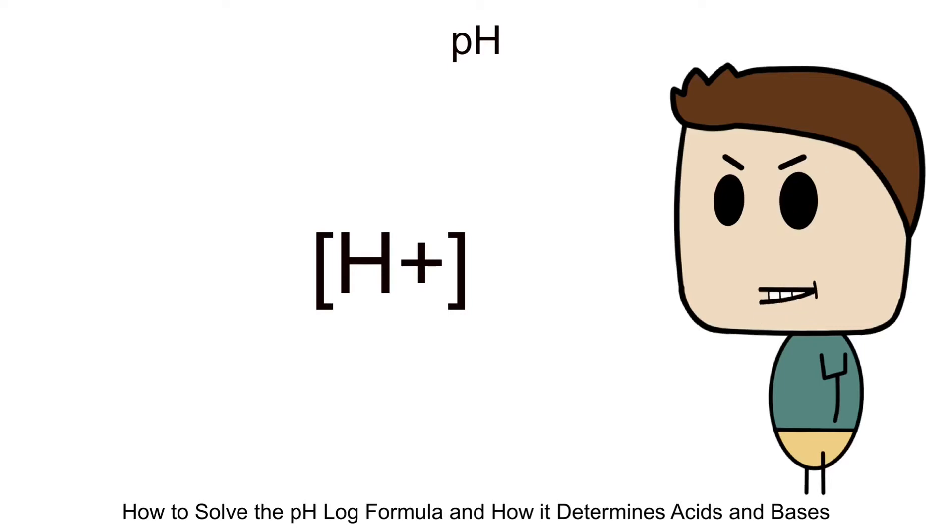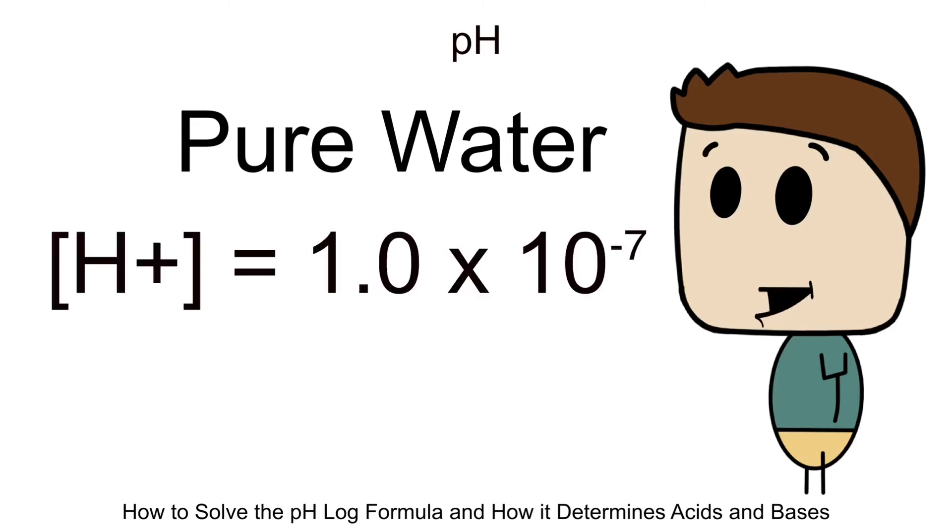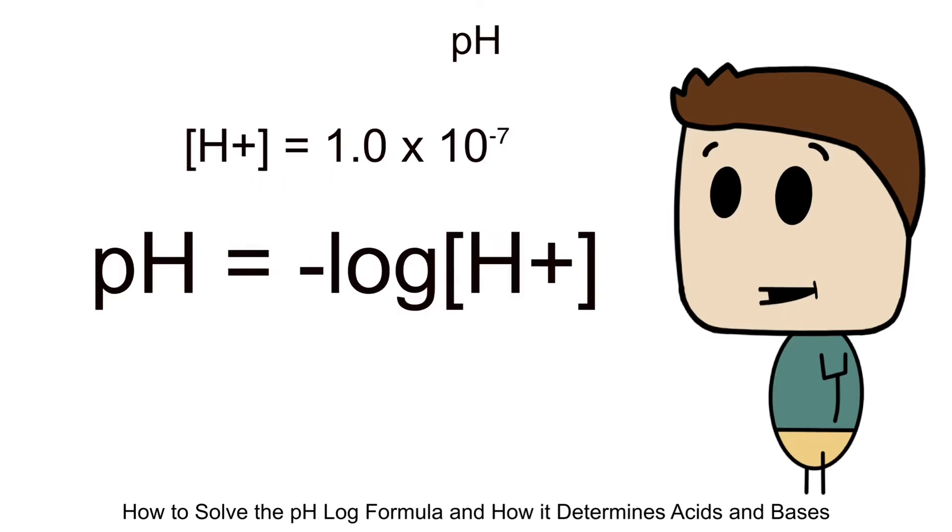H+ concentration usually exists in lots of decimal places, like 0.0000 something. If I were to give you a liter of pure water, its hydrogen ion concentration, its molar concentration, would be 1.0 times 10 to the negative 7. And if you plugged it into this equation, into this pH log equation, pure water has a pH of 7.